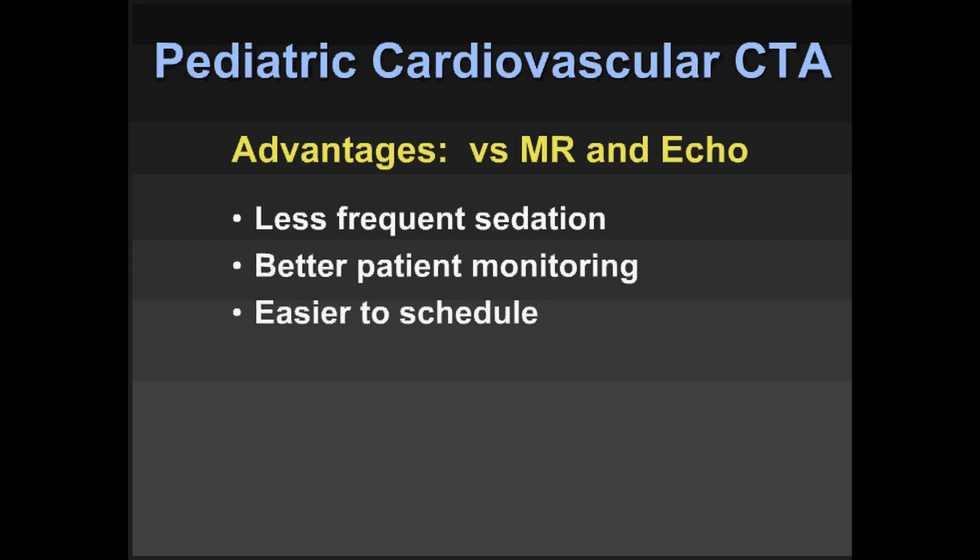Examinations under a second versus the half-hour to an hour MR time — that's easier to schedule. If it's a two-week wait for MR but a one-day or less wait for CT, a lot of times we're going to elect to get that information more easily. It's also more consistent quality. There are obviously adept people doing great MR even in children, but the fact of the matter is CT examination to examination is going to be more consistent than MR cardiac evaluation.